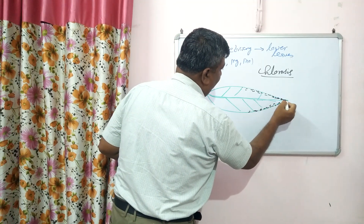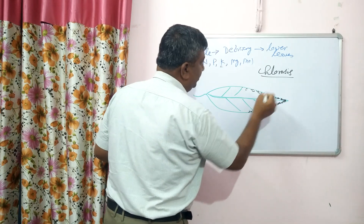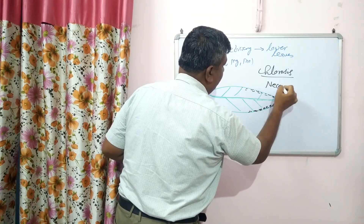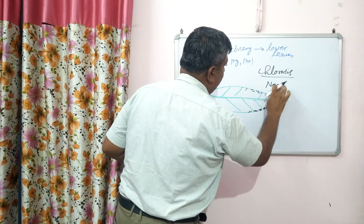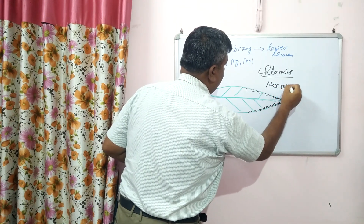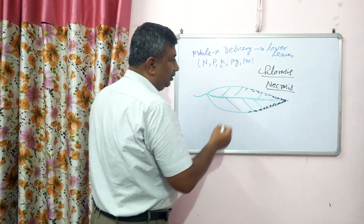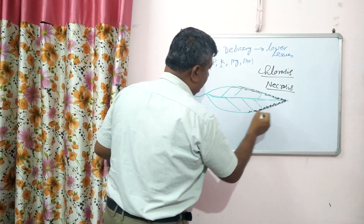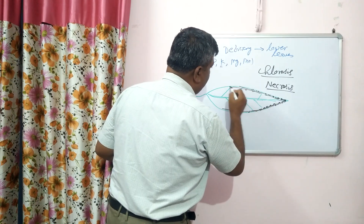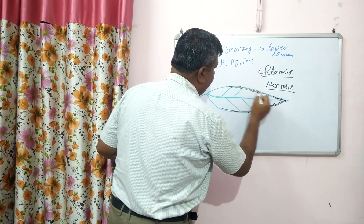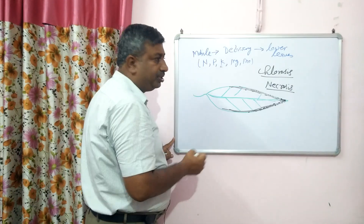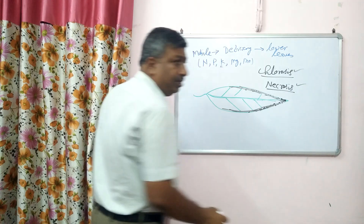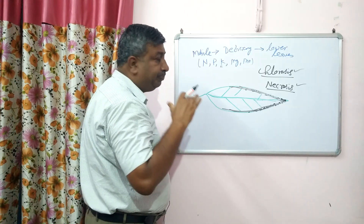The tips are affected first, then there is necrosis. Necrosis means death of tissue — this area becomes dead. So first there is chlorosis, then necrosis. These are the very peculiar symptoms of potassium deficiency.